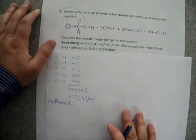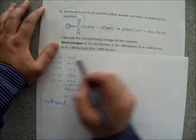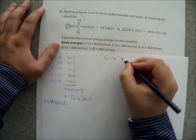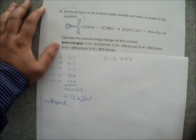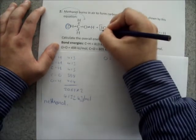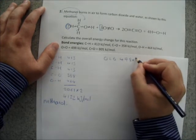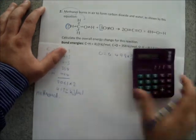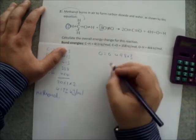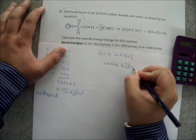Okay. Next, we need to do the same for oxygen. Now, the oxygen here only has one type of bond. It has an oxygen-oxygen double bond. And that oxygen-oxygen double bond has a value of 498, a bond energy of 498 kilojoules per mole. But, there are three oxygen molecules here. So we take that 498 and we times it by three, which gives us 1494 kilojoules per mole for the oxygen.